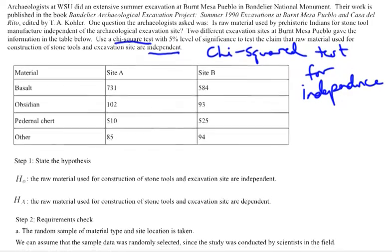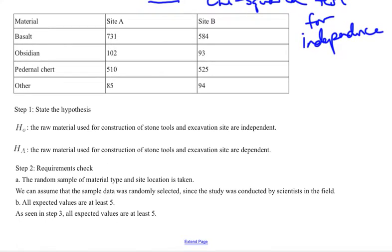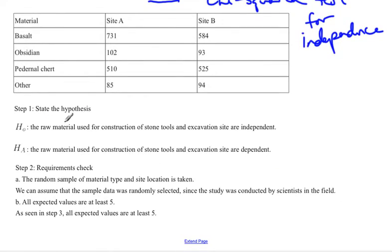Step 1 of every hypothesis test is to state the hypotheses. In this case, H₀: the raw material used for construction of stone tools and excavation sites are independent. Hₐ: the raw material used for construction of stone tools and excavation sites are dependent.